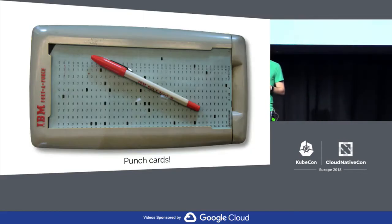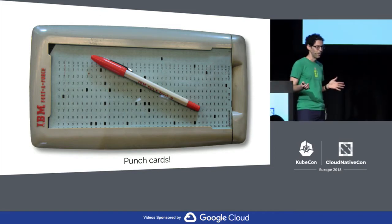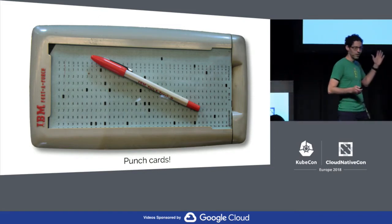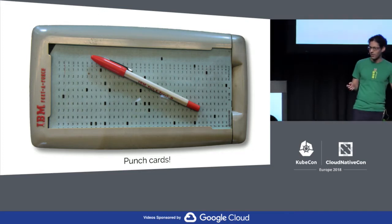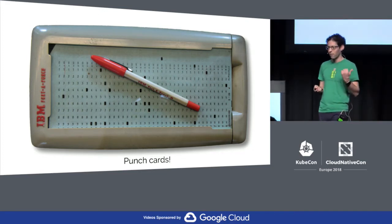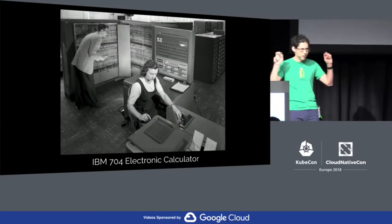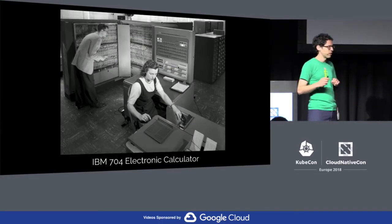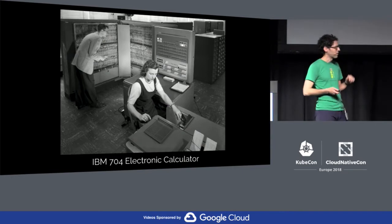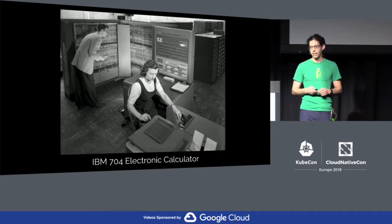Moving forward a little bit, we have punch cards. Better than physically rewiring, but not exactly readable to a normal person, and it takes a lot of time to both program and when you're ready to deploy your app, you have to run it through a punch card reader, like you can see here with this IBM 704 electronic calculator.